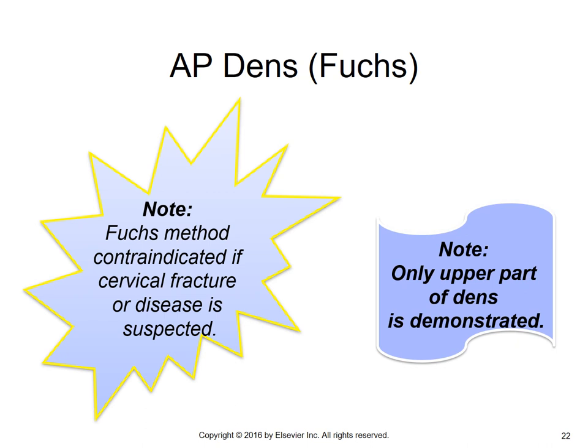For the AP projection called the Fuchs method, the patient's head has to be brought way back and the chin brought way up. The Fuchs method is contraindicated if there is a suspected fracture or a disease that would prevent the patient from bringing their head all the way back.